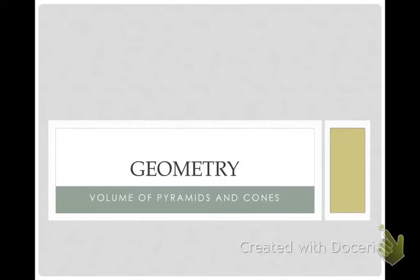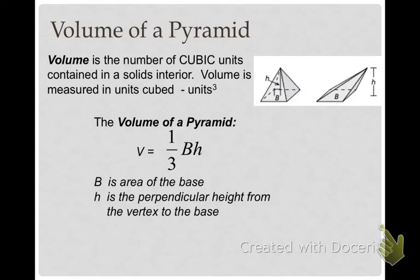In this video, we're going to look at the volume of pyramids and cones. The volume of a pyramid is exactly one-third the volume of a prism. It's one-third times the area of the base times the height.